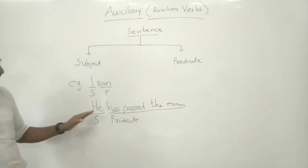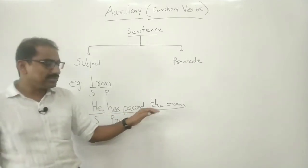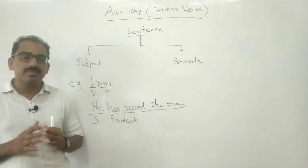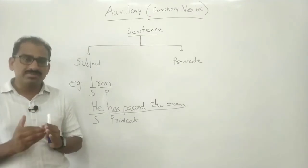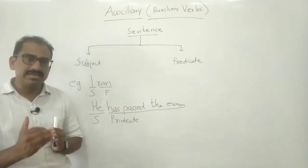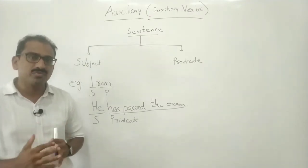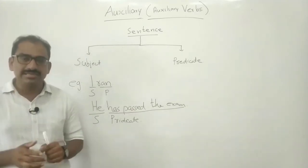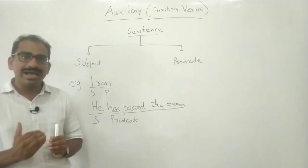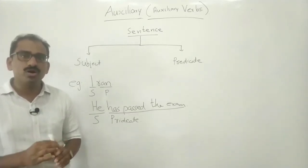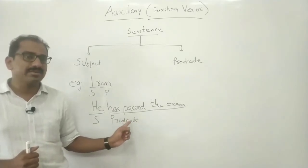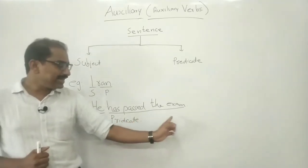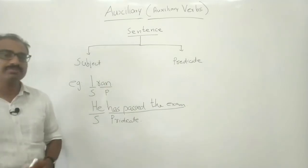For example, 'He has passed the exam.' He is the subject, and 'has passed the exam' is the predicate. The auxiliary verb 'has' functions as a supporting or helping verb. 'Passed' is the main verb. So this part of the sentence acts as the predicate.